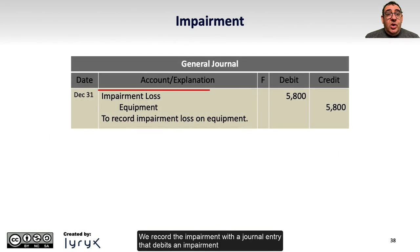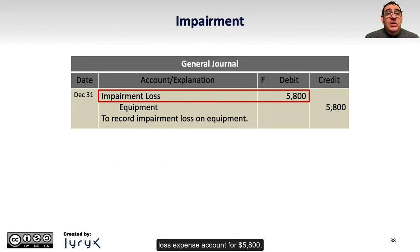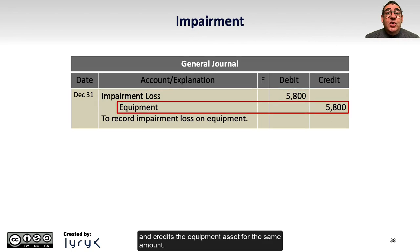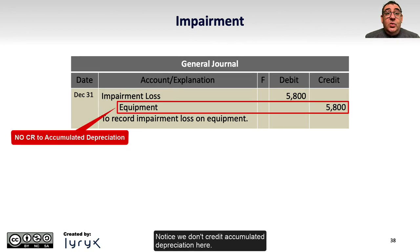We record the impairment with a journal entry that debits an impairment loss expense account for $5,800, and credits the equipment asset for the same amount. Notice we don't credit accumulated depreciation here.